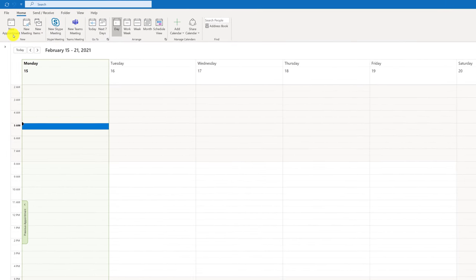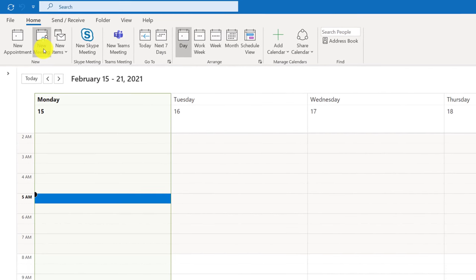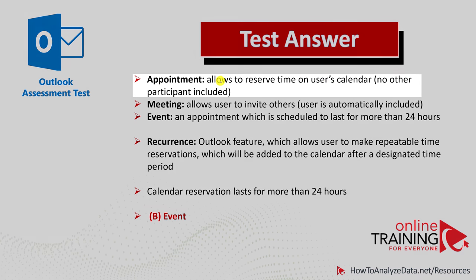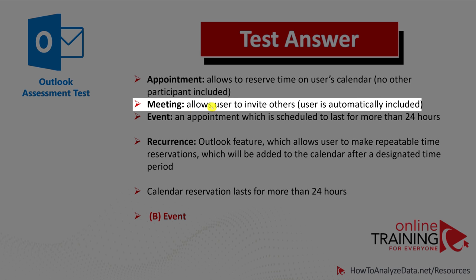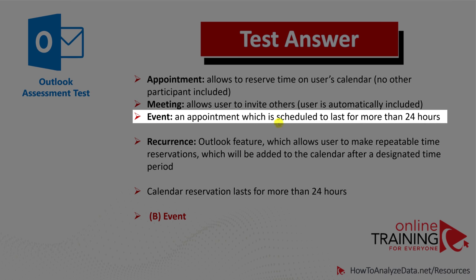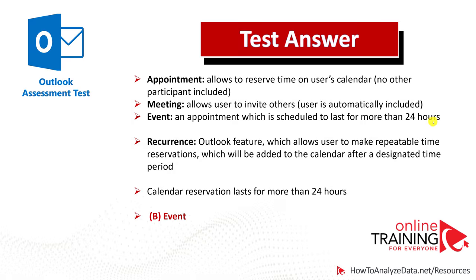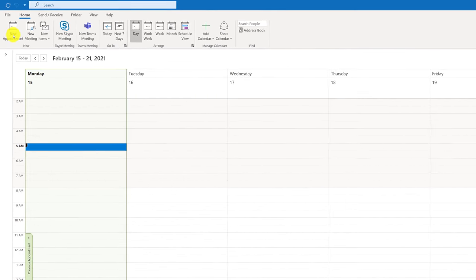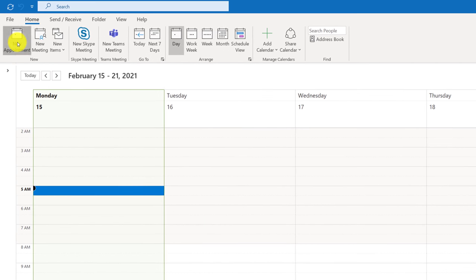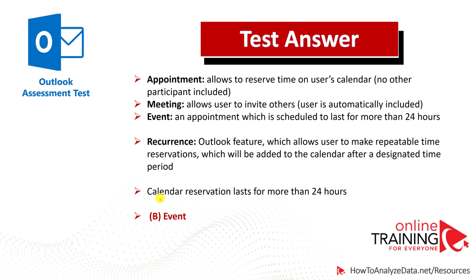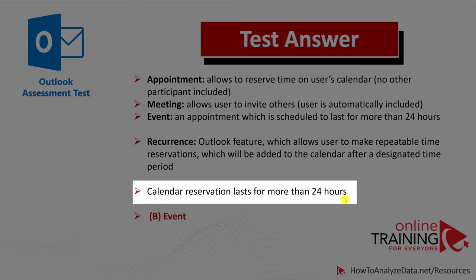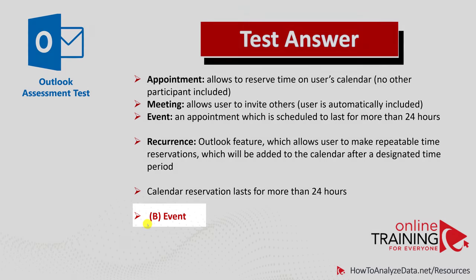There are three different options in Outlook for time reservation: Appointments, Meetings, and Events. Appointments allow a user to reserve time on the calendar with no other participants. Meetings allow a user to invite others, where the user is automatically included. An event is an appointment or meeting scheduled to last more than 24 hours. To schedule an event, you start with a new appointment and select all-day duration, and the appointment becomes an event. Because this reservation lasts more than 24 hours, the correct choice is Choice B, event.